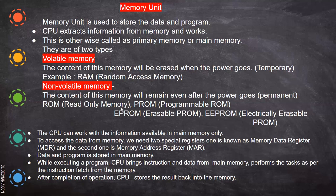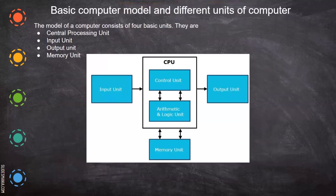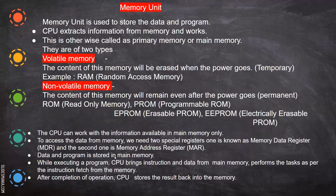The CPU can only work with information available in main memory. As shown in the picture, the CPU is connected to the memory unit, not directly to the hard disk. The hard disk — C and D drives — is separate. The memory unit here is our RAM, random access memory. So anything must first be loaded into main memory before the CPU can access it.